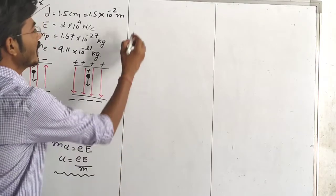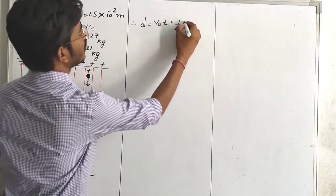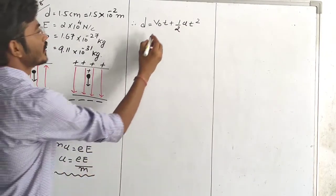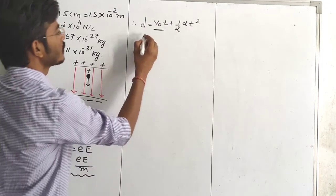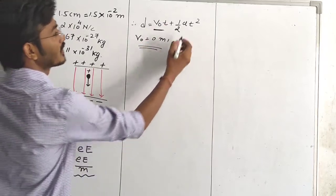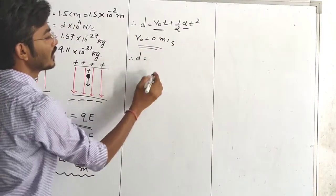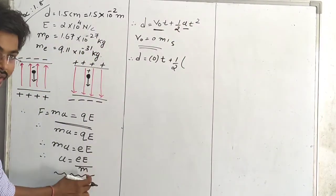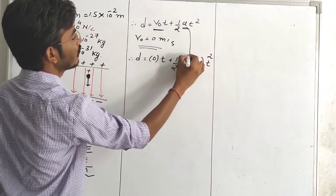Now as we know, the distance equation is: D is equal to V₀T plus half A T square. We have to put the value of V₀. At the initial stage, V₀ will be equal to 0 meter per second, since the particle starts from rest. And the value of A we have already obtained. So D becomes equal to half into (small e into capital E divided by M) into T square.